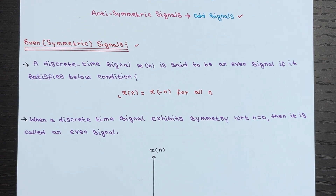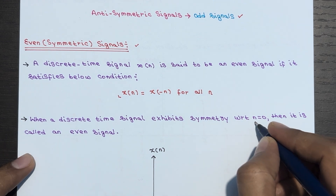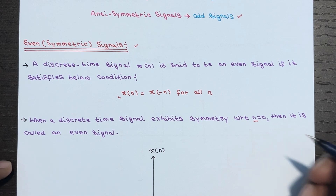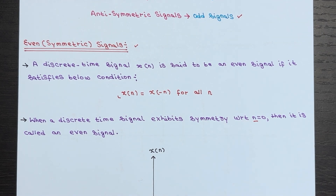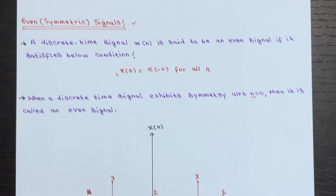An even signal is a discrete time signal that is symmetrical with respect to n = 0. It means that the signal is the same on both sides of the vertical axis or time origin — the signal is identical on both sides. Let's see an example.